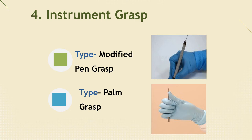Contents 4: instrument grasp. By holding the instrument correctly, it is easy to control the instrument and provide stability to the patient and clinician during treatment. In addition, by controlling the intensity of holding the instrument, it is possible to increase tactile feel, detect binding attachment on tooth surfaces, and reduce fatigue on the clinician's hands and fingers. We will look at two methods of holding an instrument: modified pen grasp and palm grasp.